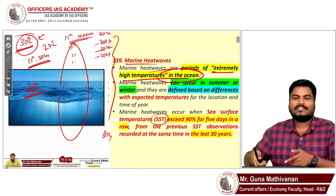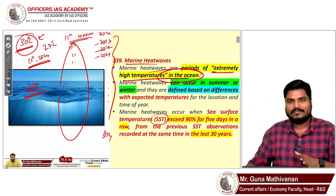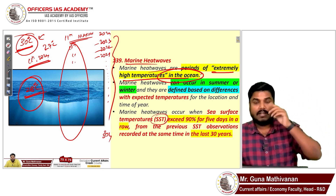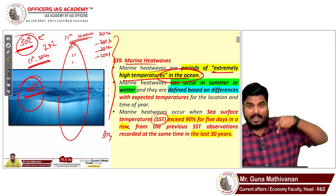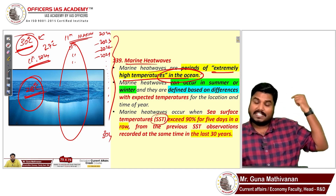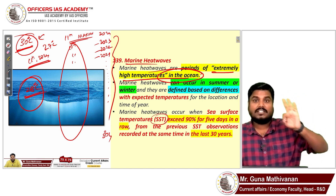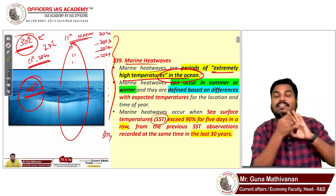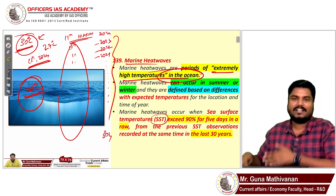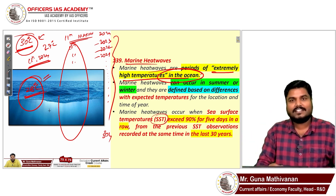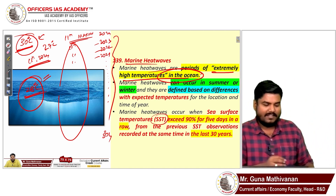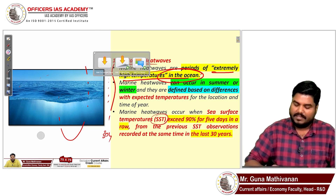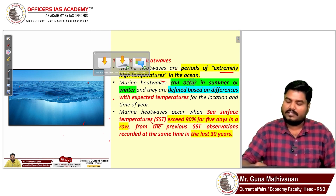To summarize: to check whether the Bay of Bengal is experiencing a marine heat wave today, I take today's sea surface temperature — say 28°C — and compare it with the last 30 years' maximum on the same date, which is 30°C. If today's temperature exceeds 90% of that maximum (27°C), we confirm a marine heat wave is occurring.